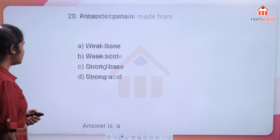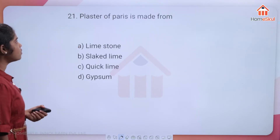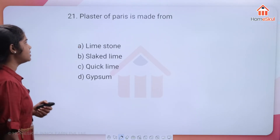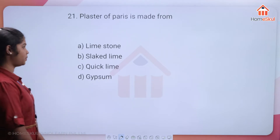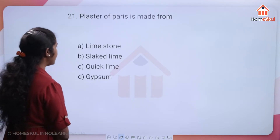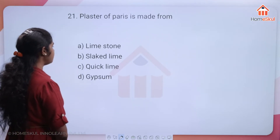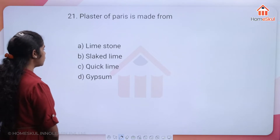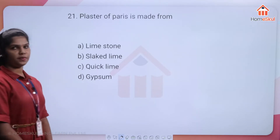Question 21: Plaster of Paris is made from — limestone, slaked lime, quicklime, or gypsum?